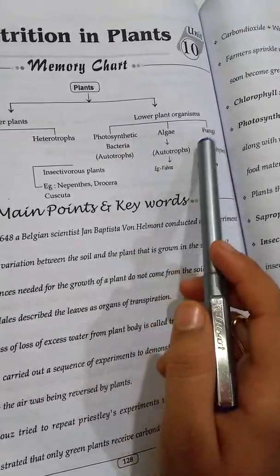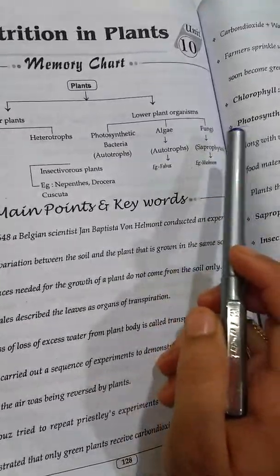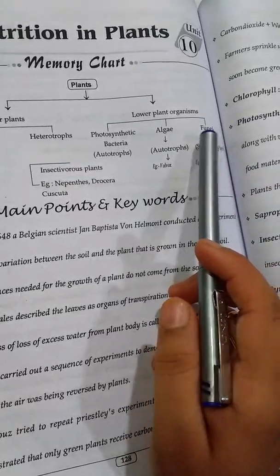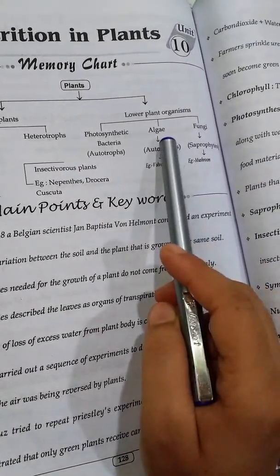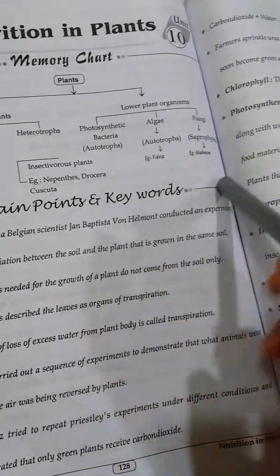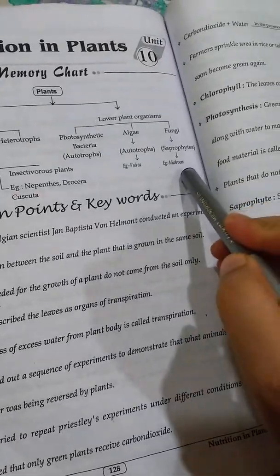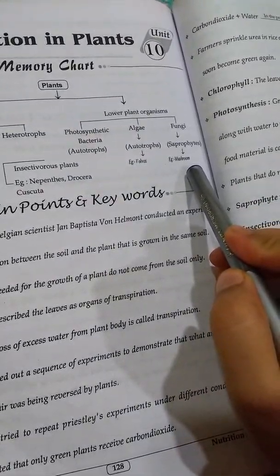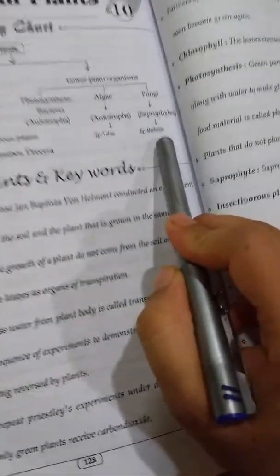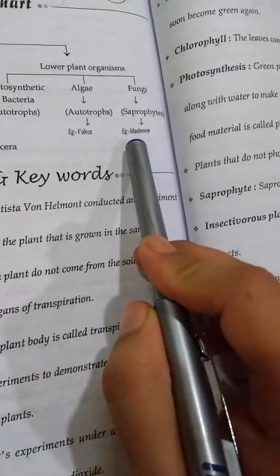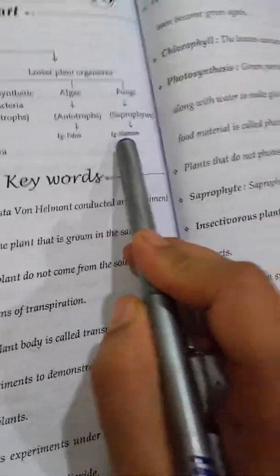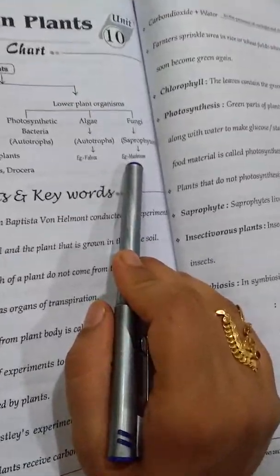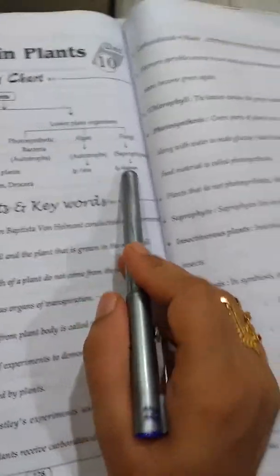Another type of plant organism is fungi. Fungi is also a type of organism present in lower plants. Fungi are also present in saprophyte plants. Examples of saprophyte plants include mushrooms. Mushrooms are one type of saprophyte plant.